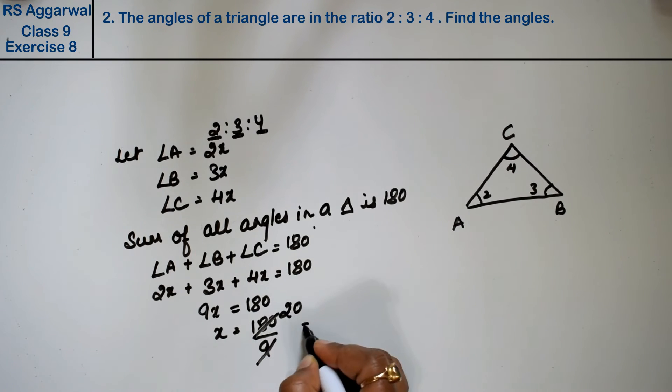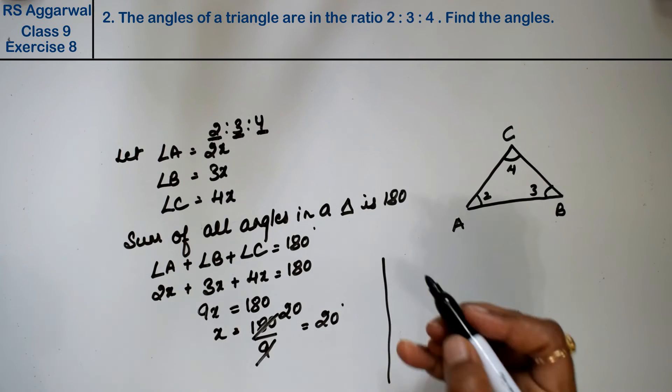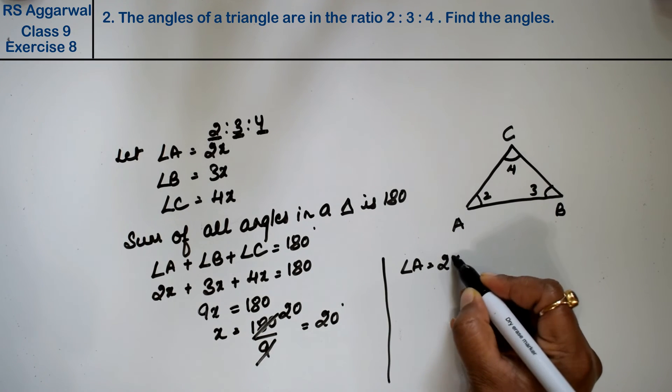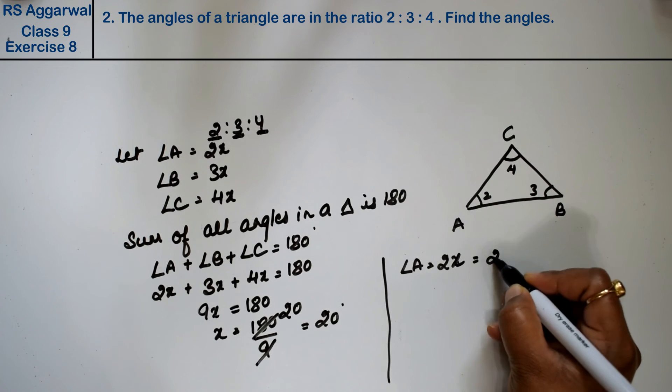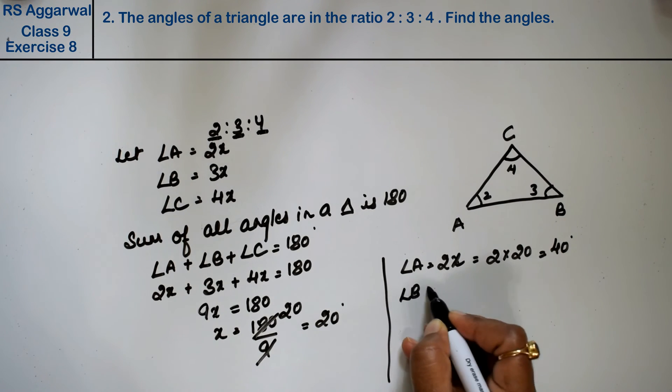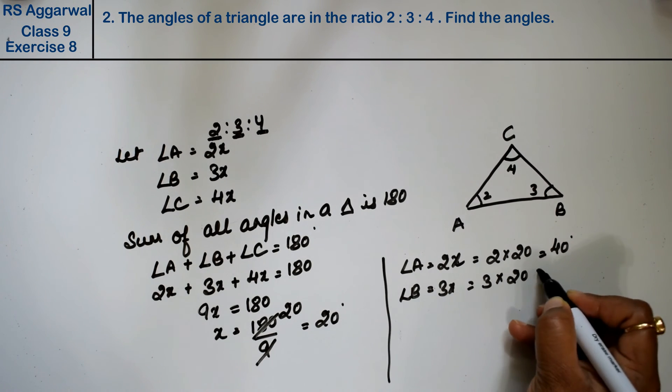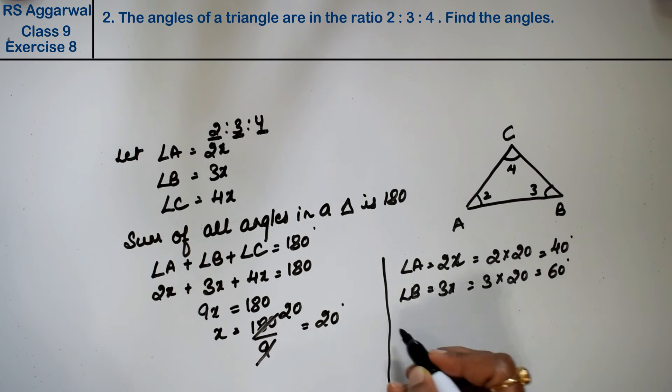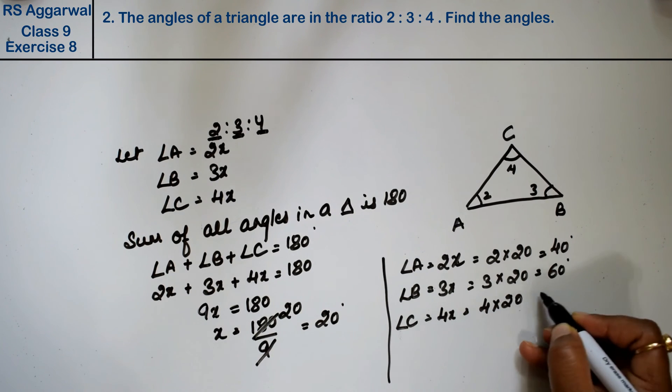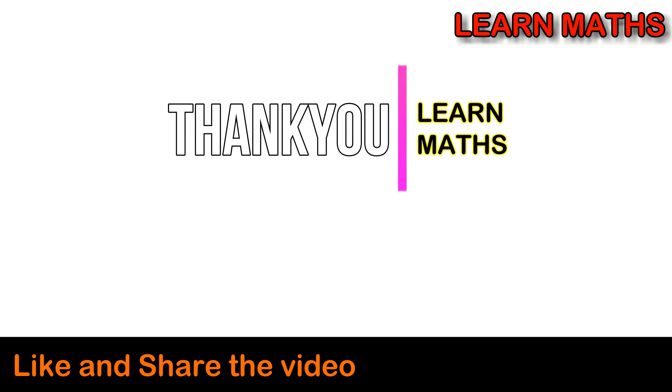Now we can find each angle. Angle A = 2x = 2 × 20 = 40 degrees. Angle B = 3x = 3 × 20 = 60 degrees. Angle C = 4x = 4 × 20 = 80 degrees. That's the answer.